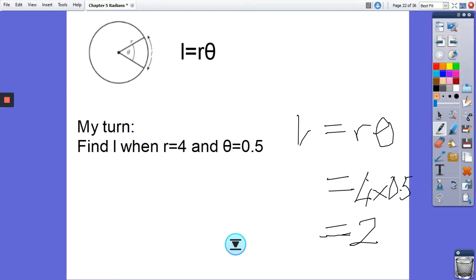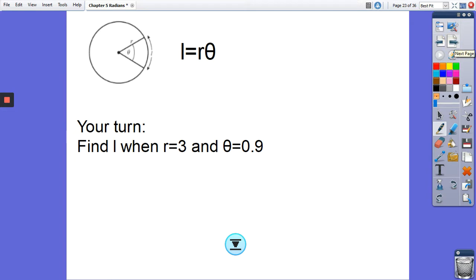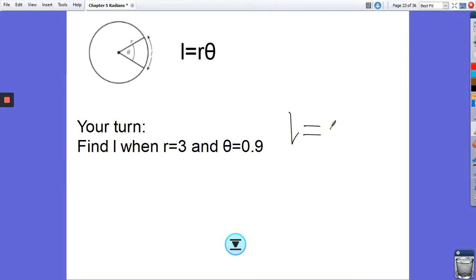Make a note of that in your notes, and then have a go at this question here. Hopefully equally straightforward. So press pause now, have a go at this question, and I'll go through it then. So L equals r theta. R equals 3, theta equals 0.9. So L equals 2.7. 2.7 centimeters, kilometers, light years, millimeters, whatever the units they've given you.